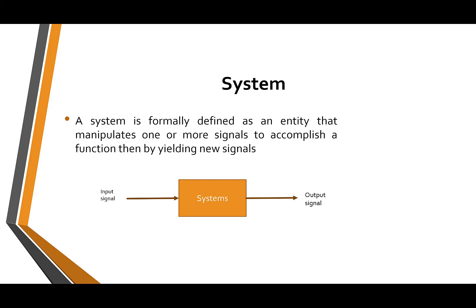What is a system? By definition, a system is formally defined as an entity that manipulates one or more signals to accomplish a function, thereby yielding new signals.